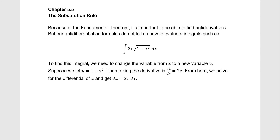In this section, we're going to be going over the substitution rule. For most of the integrals we've been evaluating, they've been relatively straightforward, and we were able to find the antiderivative just by looking at it and knowing the rules and formulas. But our anti-differentiation formulas are not always going to be able to help us. For example, the integral of 2x times the square root of 1 plus x squared dx cannot simply be solved that way. So to find this integral, we're going to have to utilize a change of variable.